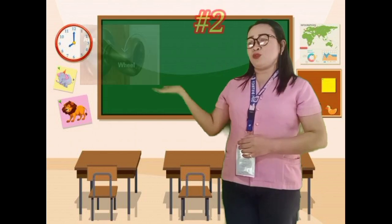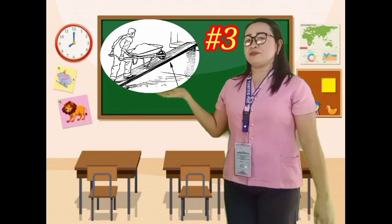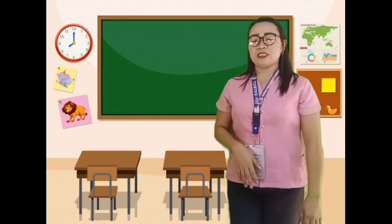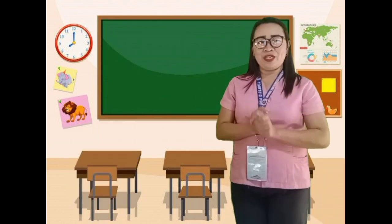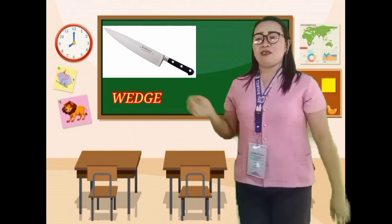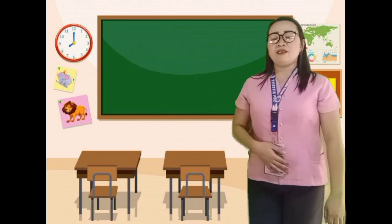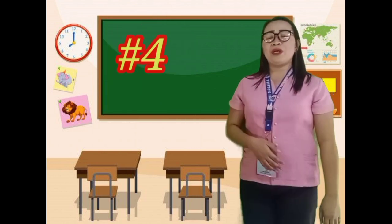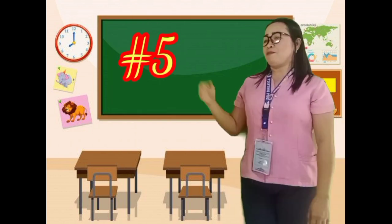Number 2. Number 3. Number 4. Number 5. Let's check your answer. Number one: wedge. Number two: wheel and axle. Number three: inclined plane. Number four: screw. And number five: pulley.